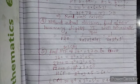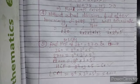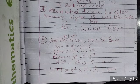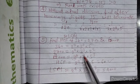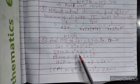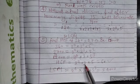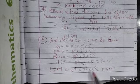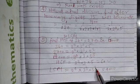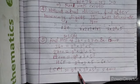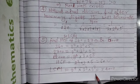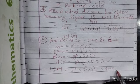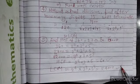Now, for the LCM of the numbers, write the highest power of all the prime factors. The highest power of 2 is 4, the highest power of 3 is 3, and the highest power of 5 is 3. So LCM is 2 power 4 into 3 cube into 5 cube, which equals 54,000.